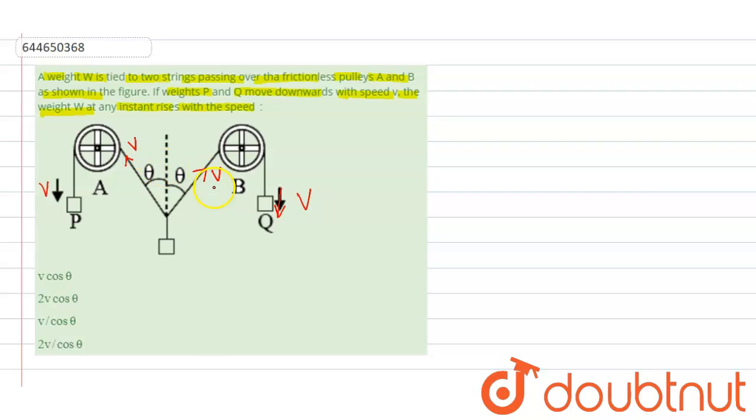Now we take the component, resolve the component of v in this direction. It will be v cos theta, and in this direction it will be v sin theta.